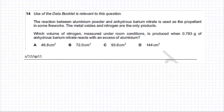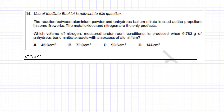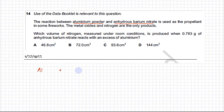The following question is about moles and finding the volume of gas. The question states that there is a reaction between aluminium powder and anhydrous barium nitrate. Anhydrous means without water, so barium nitrate is a dry anhydrous salt. Aluminium is reacting with barium nitrate, which is Ba(NO₃)₂ — Ba is 2+, NO₃ is minus 1.